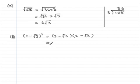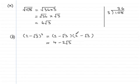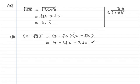Expanding: 2 times 2 is 4. Then 2 times negative root 3 is minus 2 root 3. Then minus root 3 times 2 is another minus 2 root 3. Finally, minus root 3 times minus root 3 gives a positive answer, and it will be 3.